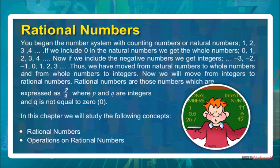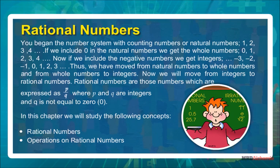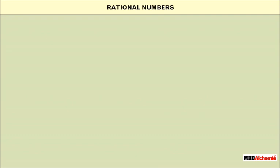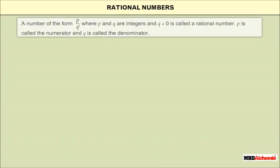Now we will move from integers to rational numbers. Rational numbers are those numbers which are expressed as p upon q, where p and q are integers and q is not equal to 0. In this chapter we will study rational numbers and operations on rational numbers. A number of the form p upon q, where p and q are integers and q is not equal to 0, is called a rational number.